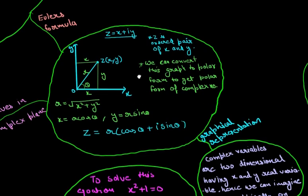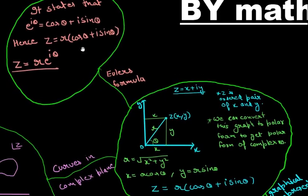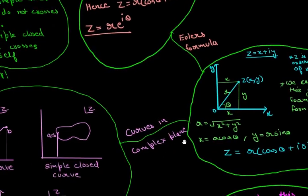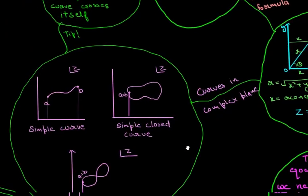From this we go to the Euler formula which says that e raised to power iota theta is equal to cos theta plus iota sin theta. We just put this in the polar form and we get this form of complex number also. Now let's go back to the curves in complex plane.